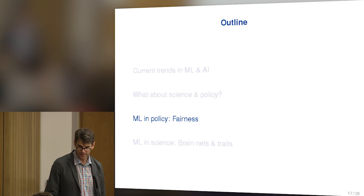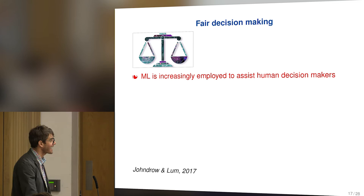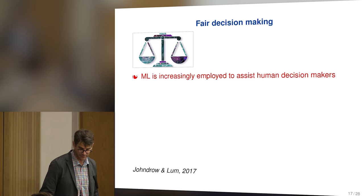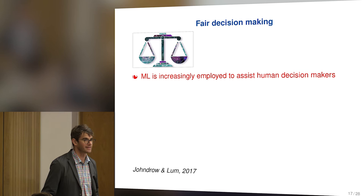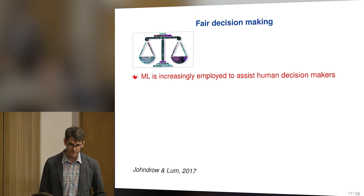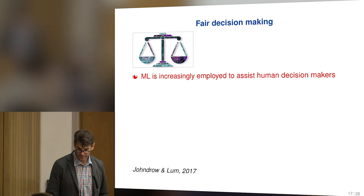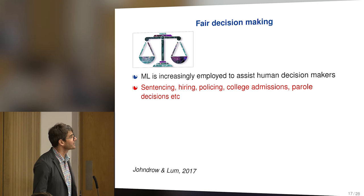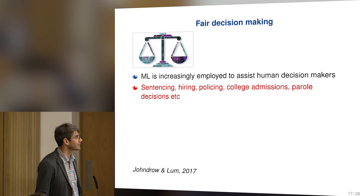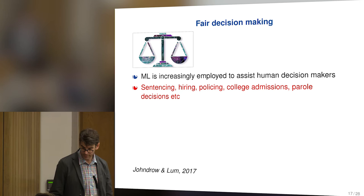Let's do a dive into fairness. I've gotten into this through a collaboration with fantastic former Duke students. James Jandro is amazing and is now at Stanford as a Stein fellow. And Kristian Lum has been the brains behind this operation — she works on fairness problems for a human rights organization. We recently got a grant from the Arnold Foundation to work on these things. We'd like to develop methods to de-bias machine learning algorithms in things like sentencing, hiring, policing, college admissions, and parole decisions — removing the influence of gender or race.